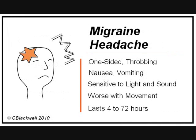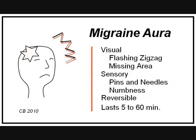The features that identify a headache as being a migraine are: the headache is one-sided, usually throbbing, with nausea, possibly vomiting, there is sensitivity to light and sound, pain is made worse by physical activity, and it lasts from 4 to 72 hours. The aura is a sensory disturbance that occurs with the migraine episodes. It can involve vision, sensation, or movement. 30% of people with migraine have the aura.